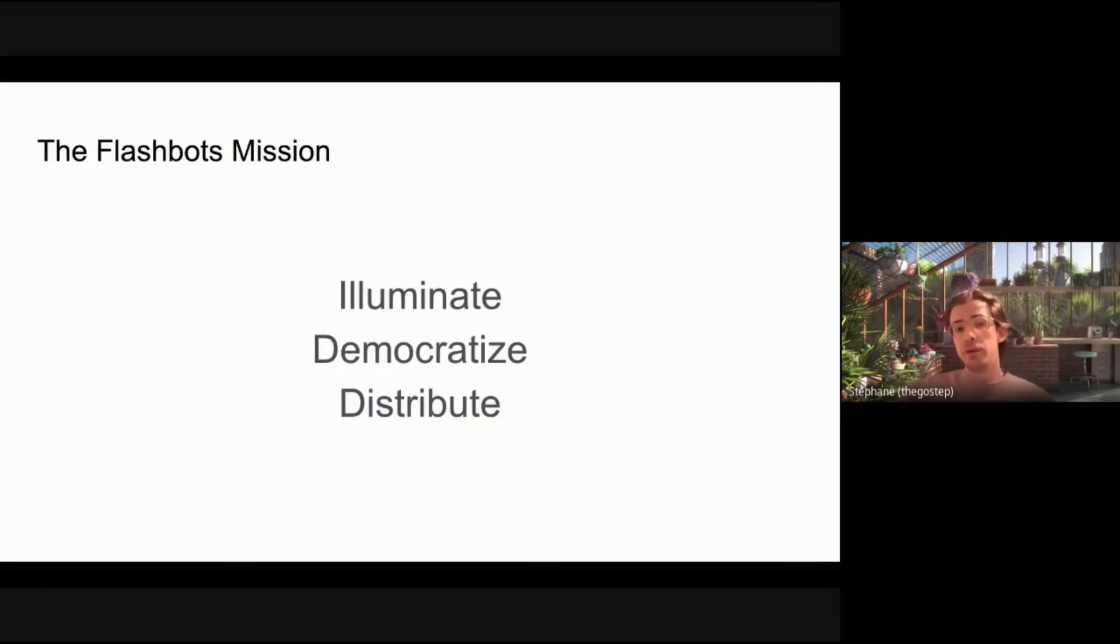Okay, I'll just repeat briefly, the Flashbots mission, right, and perhaps give some context in how we think about these problems. We really aim to illuminate, democratize, and distribute. So illuminate the markets, bring some transparency, price transparency, transparency to the type of activity that the various actors perform. Democratize really means minimizing barriers to entry, keeping these markets competitive and fair to participate, such that there is no sort of entrenchment that becomes destabilizing for the market.